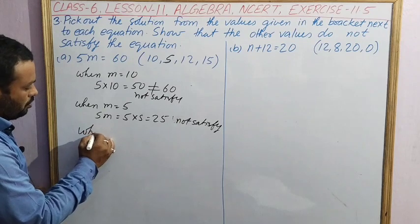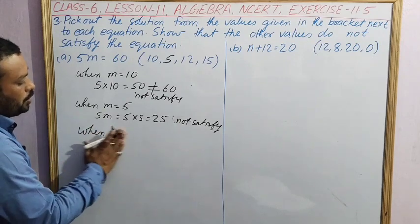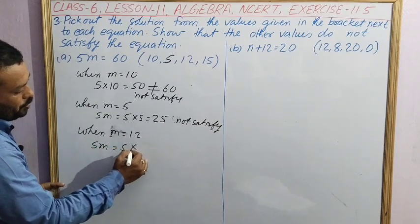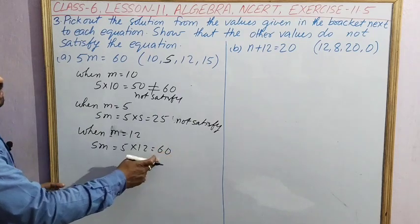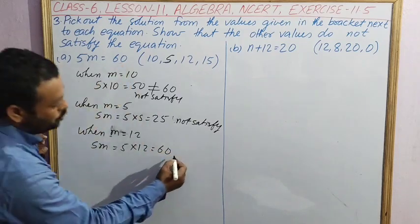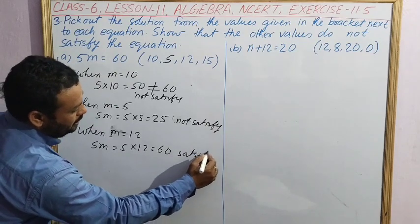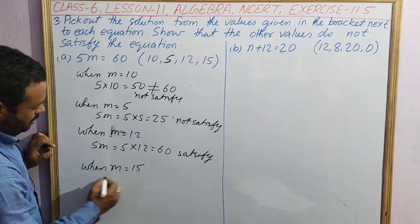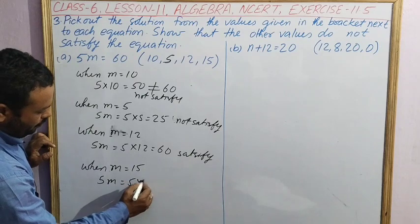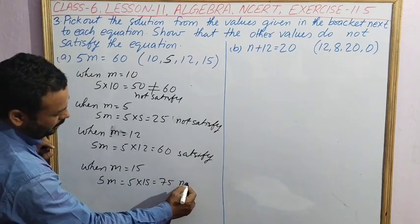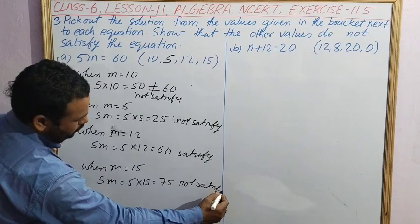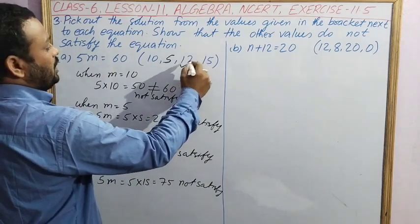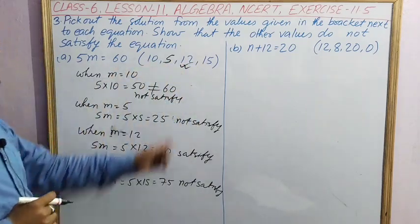When m equal to 12, 5m, that is 5 into 12 equal to 60. Left hand side is 60, right hand side is 60. So this one satisfies. Then when m equal to 15, 5m equal to 5 into 15 is equal to 75, not satisfy. After solving for each value, we see that 12 is satisfying the equation, so the correct answer is 12.